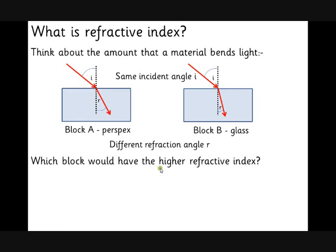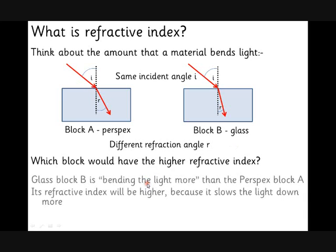Well it happens because they've got this different property called refractive index, and refractive index is a measure of how much the light slows down. Which one's slowing the light down more? Well it must be the glass, because the glass is the one that's bending the light more. The light bends because it slows down. If it bends more, it must be slowing down more.